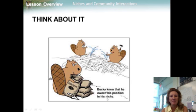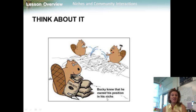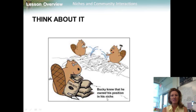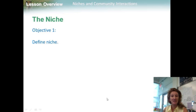Think about it: if someone asks where an organism lives, that person might answer 'on a coral reef' or 'in the desert.' These answers give the environment a location, but ecologists need more information to understand fully why an organism lives where it does and how it fits into its surroundings. So what else do scientists need to know? First of all, they need to understand niches.